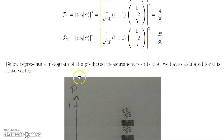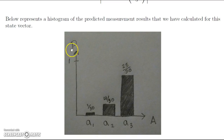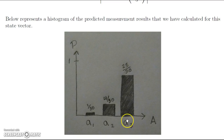Now we represent the histogram of the predicted measurement results, with probability on the y-axis and the eigenvalues of operator A on the x-axis. The probability of measuring A1 is 1 over 30, the probability of measuring A2 is 4 over 30, and the probability of measuring A3 is 25 over 30. This corresponds to the three results calculated above.